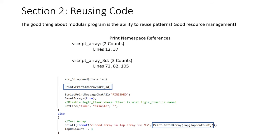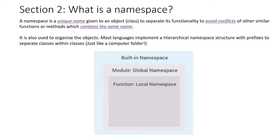The good thing about modular programming is the ability to reuse parts, which is good resource management. The vscript print array file contains the logic behind printing and displaying the array back to the game. The vscript array uses these functions twice, and the vscript array 3D file contains three references to the print namespace. So if I create another one, I can simply reference the vscript print array file and it will have access without rewriting the whole code again. A namespace is a unique name given to an object, preferably a class, to separate its functionality and avoid conflicts with other similar functions or methods of the same name.